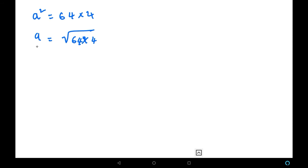If it is a², it will be 64 × 4. If it is a, then we have to take the square root on RHS. As we know that 64 is 8² and 4 is 2², let us write it in that form: 8² × 2².